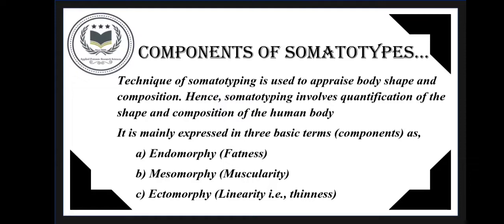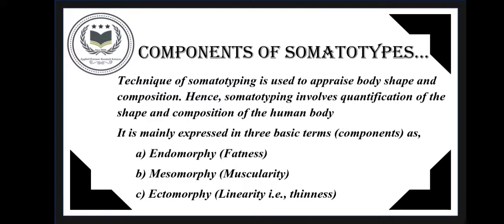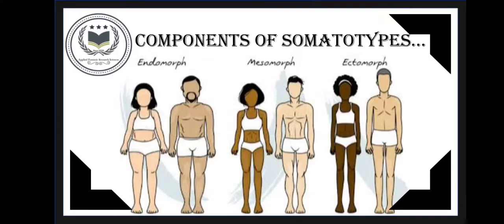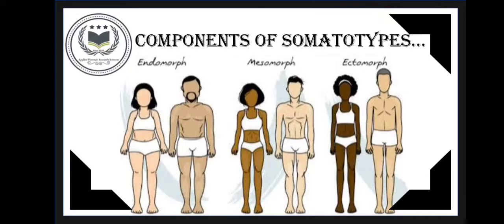Components of Somatotypes. The technique of somatotyping is used to appraise — that is, assess the value or quality of — a body's shape and composition. Somatotyping involves the quantification of the shape and composition of a human body. It is mainly expressed in three basic components: endomorphic, characterized as fatness; mesomorphic, characterized as muscularity of the body; and ectomorphic, which means linearity — that is, thinness or lean shape of the body.